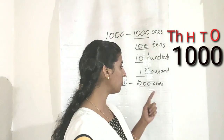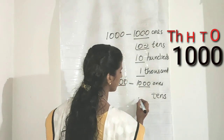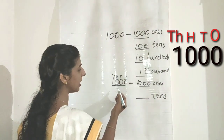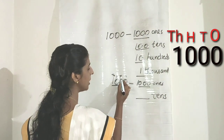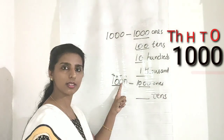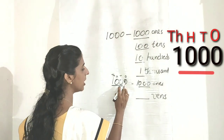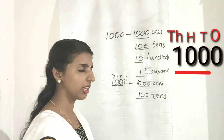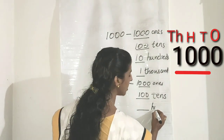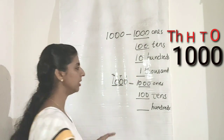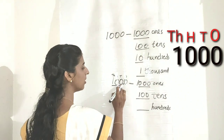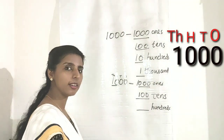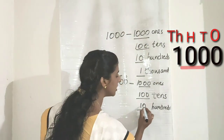Next, how many tens are there in thousand? We check where the tens place is, and we drop up to the tens place. From that we can read hundred — so hundred tens are there. Next, how many hundreds are there? We check where hundreds place is and drop up to that. The remaining number is ten, so ten hundreds are there.